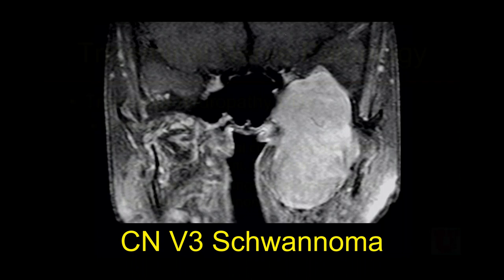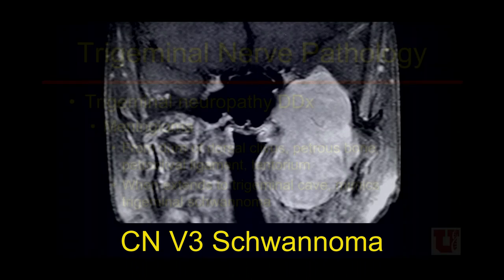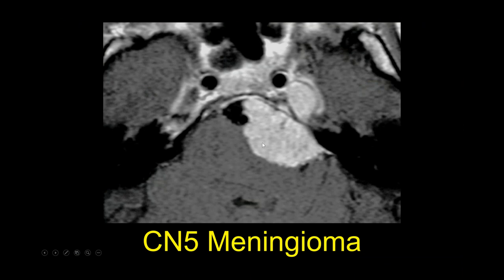Meningiomas are extraaxial dural-based masses — the most common extraaxial mass in adults — arising from arachnoid cap cells. If a dural-based mass goes over the porus trigeminus, the opening to the trigeminal cave, it may escape through that foramen and look a lot like a trigeminal schwannoma. On axial post-contrast MR we see an enhancing dural-based extraaxial mass in the prepontine cistern with a CSF/vascular cleft, accordioned brain gyri, dural tails, and extension of abnormal enhancement into the trigeminal cistern or Meckel's cave — a good appearance for meningioma extending into the trigeminal cistern.